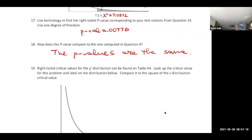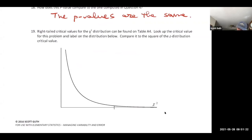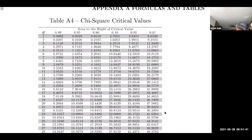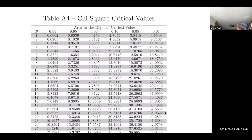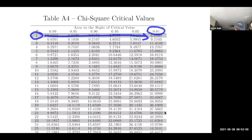There are also critical values for the chi-square distribution, found on Table A4. For our problem, alpha = 0.01 and one degree of freedom: going to one degree of freedom and alpha = 0.01, the chi-square critical value is 6.6349.